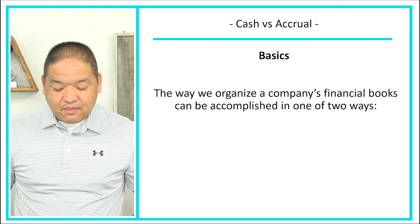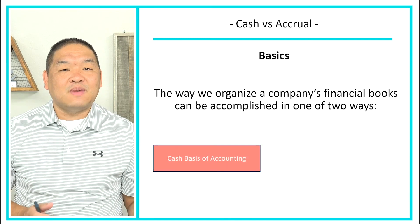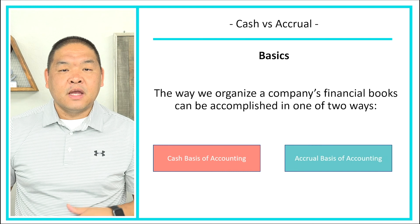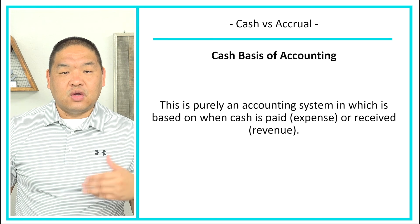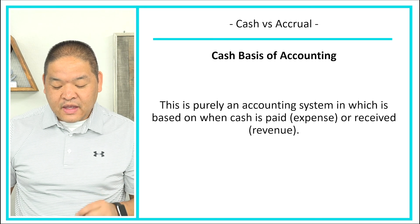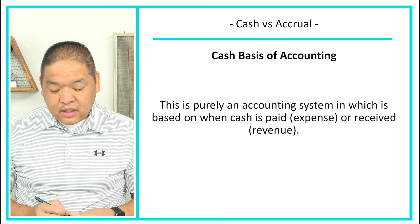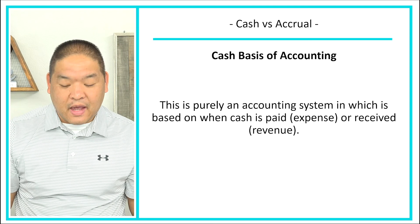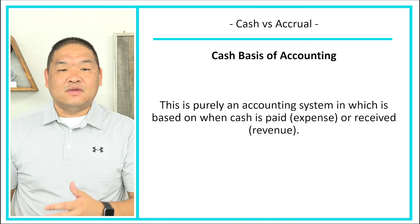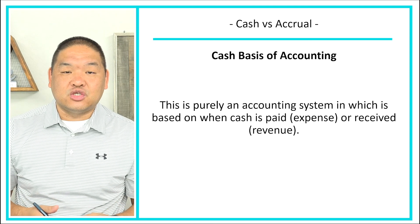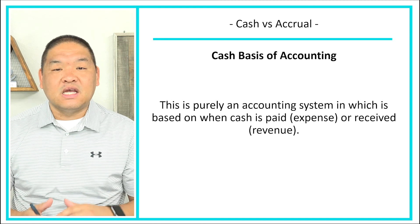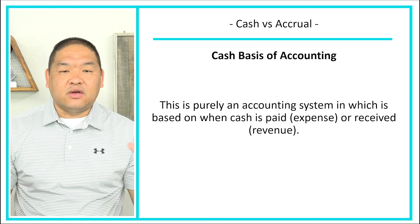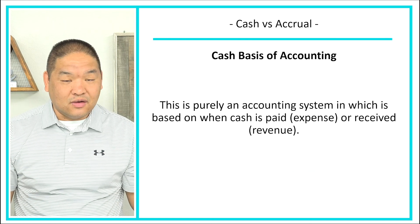The way that we organize a company's financial books can be accomplished in one of two ways: we can either use the cash basis of accounting or the accrual basis of accounting. Cash basis of accounting is purely an accounting system based on when cash is paid — for instance, an expense — or received — for instance, in a revenue situation. With cash basis, we follow the cash.